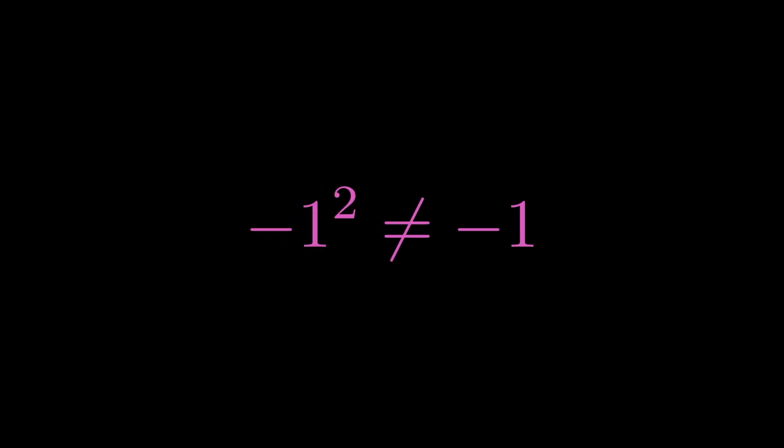This is where imaginary numbers come to the rescue. We invent a new number called i, and i is defined to satisfy this equation. Therefore, we see that i is equal to the square root of minus 1.